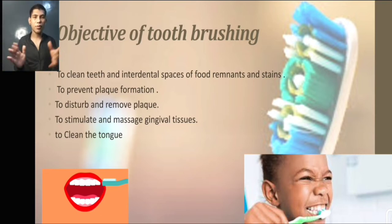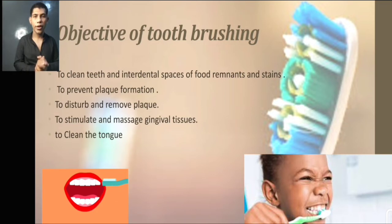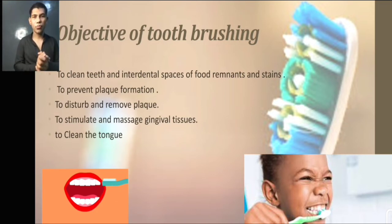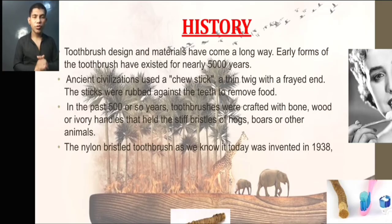The objectives of the toothbrush are: to clean teeth and interdental spaces, food remains and stains; to prevent plaque formation and to disturb and remove plaque; to stimulate and massage the gingival tissues; and to clean the tongue. The history is again an important point of my presentation about the toothbrush product.